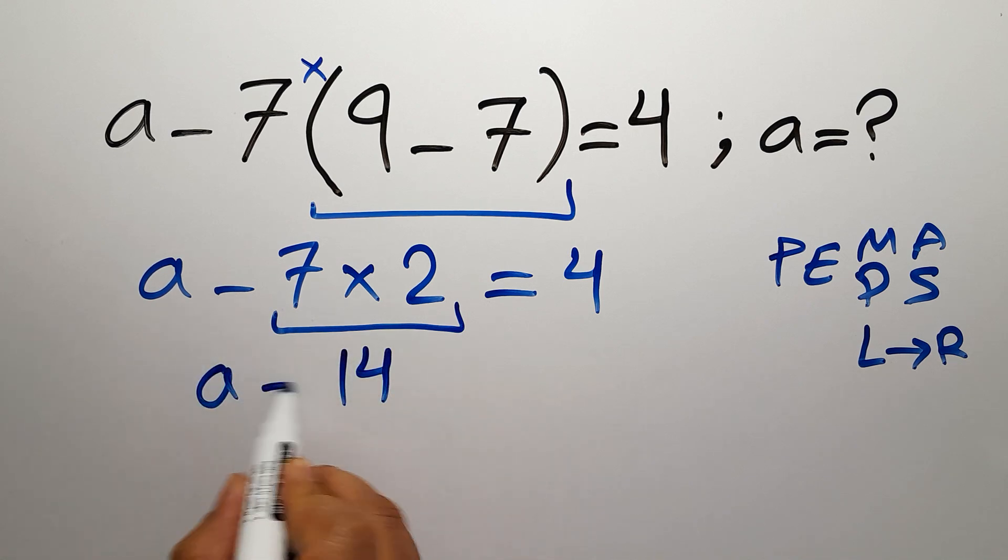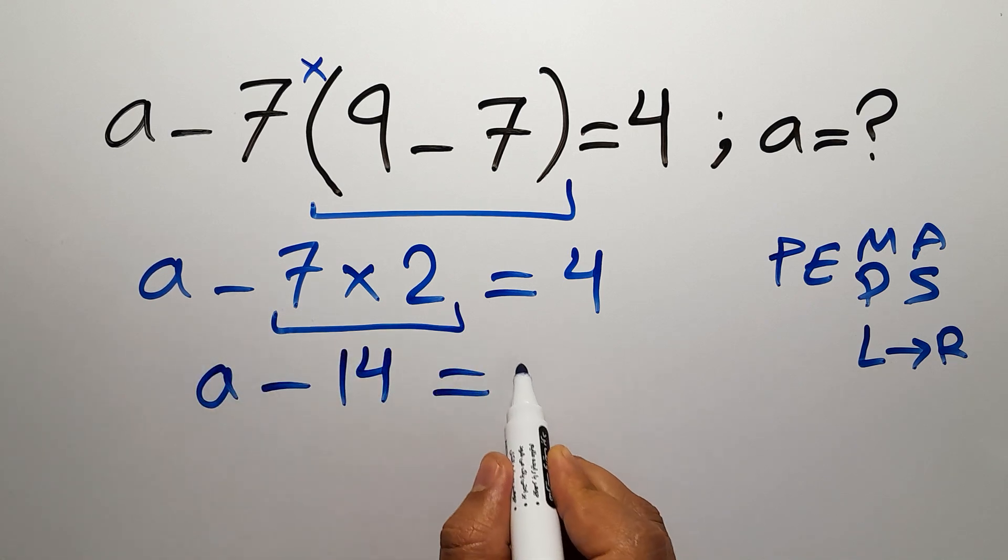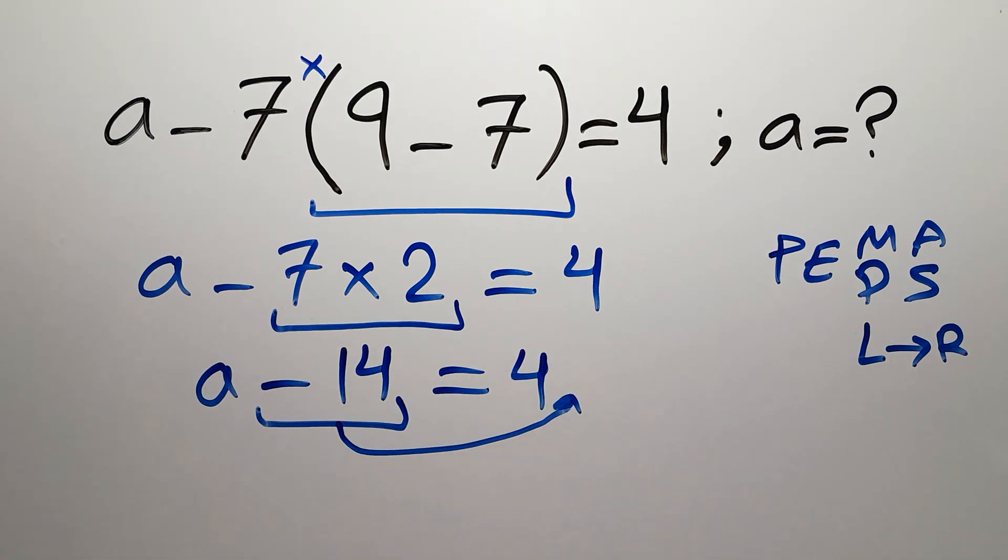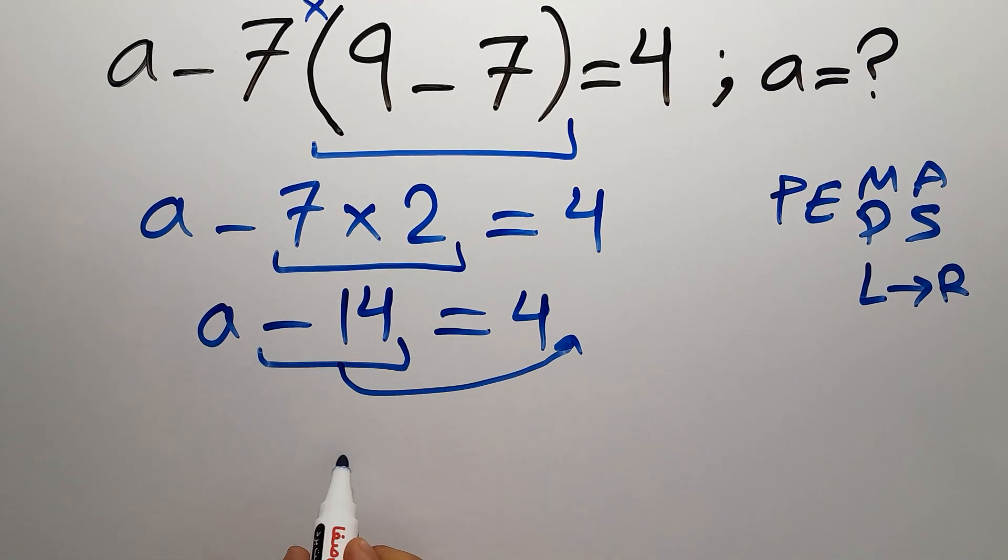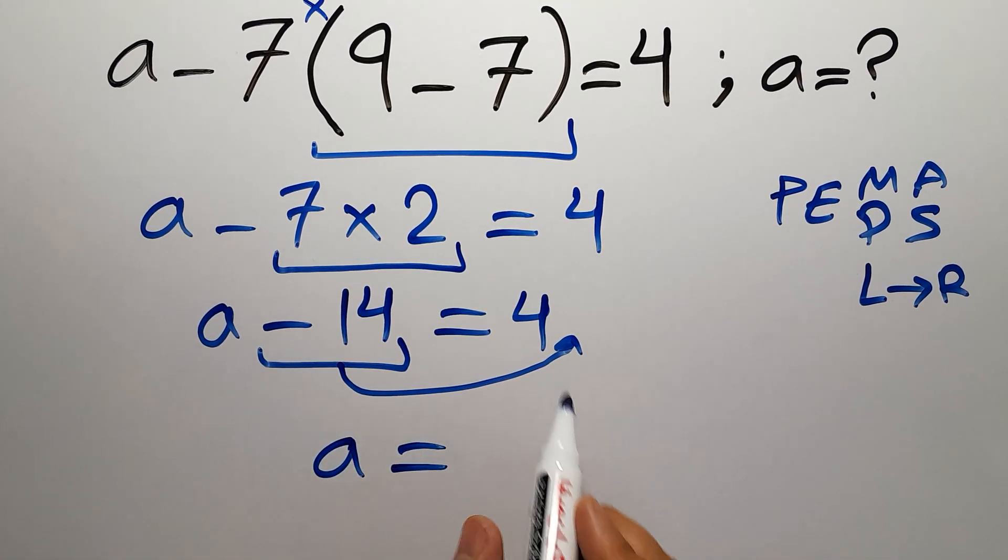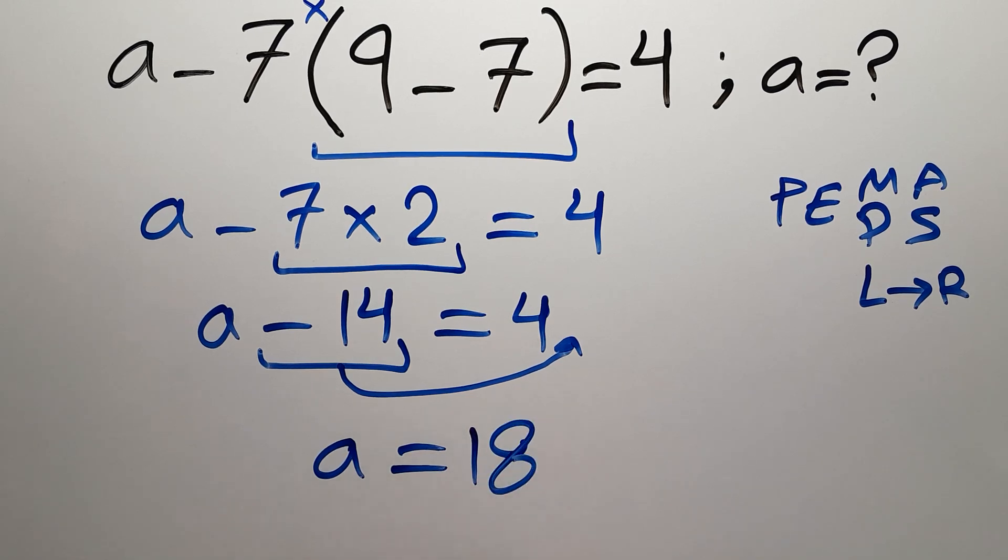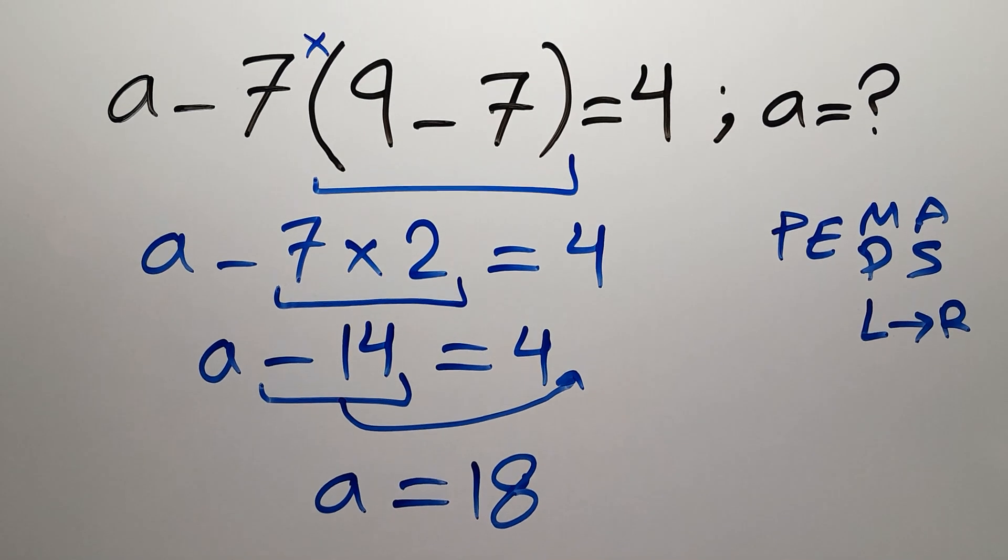So A minus 14 equals 4. Now let's move this minus 14 to the right hand side. So A will be equal to 4 plus 14, which equals 18. That means our final value for A is just 18.